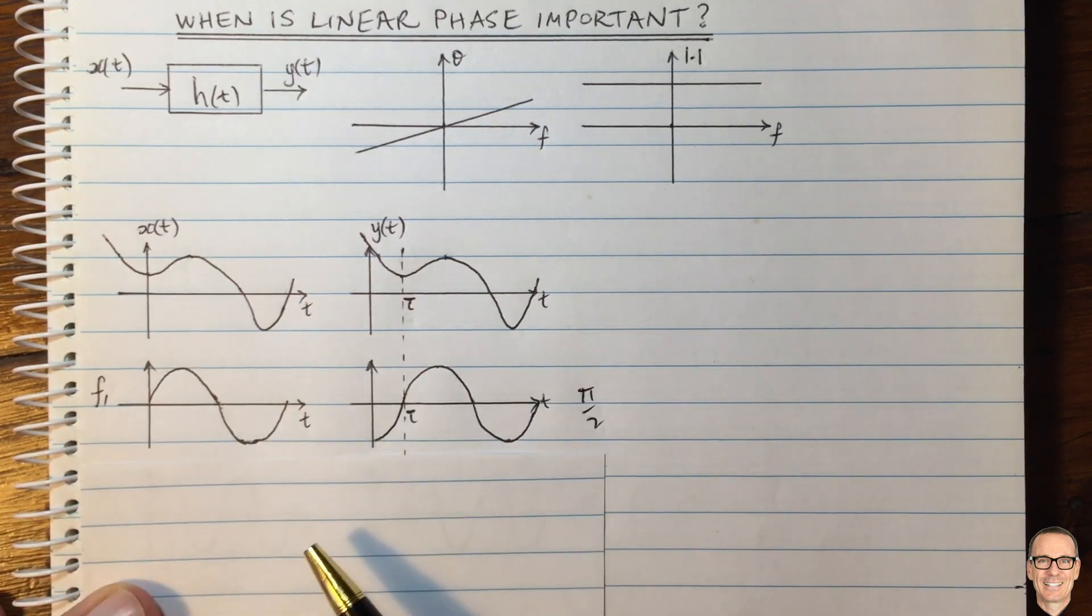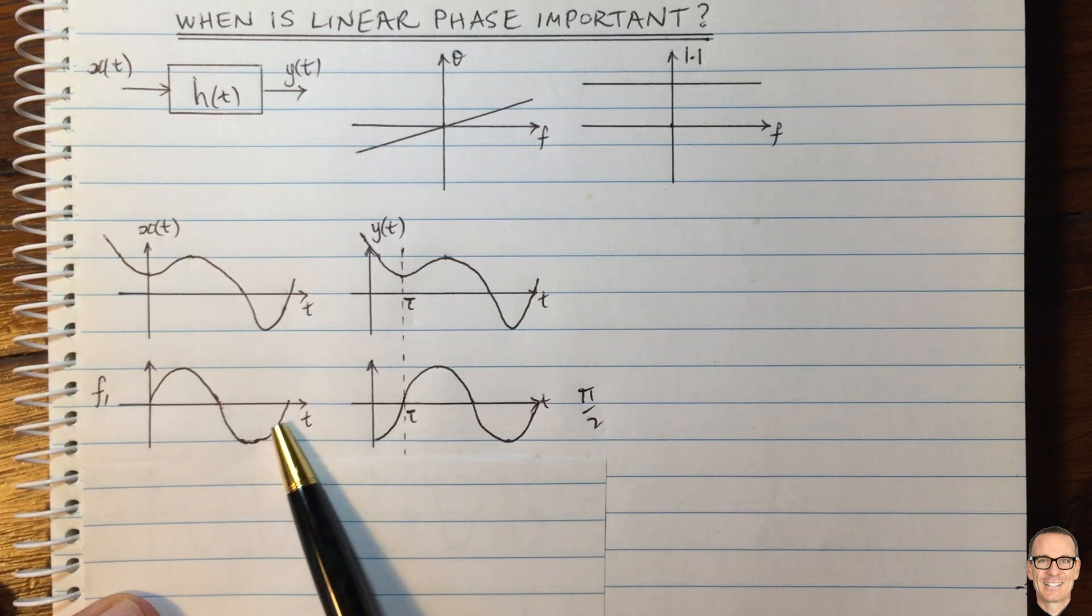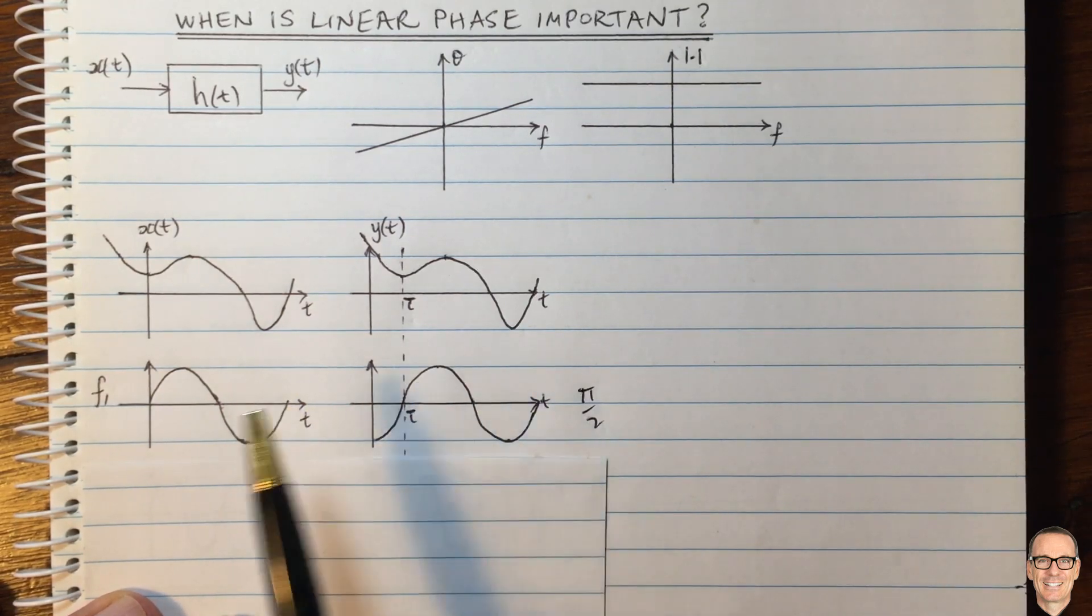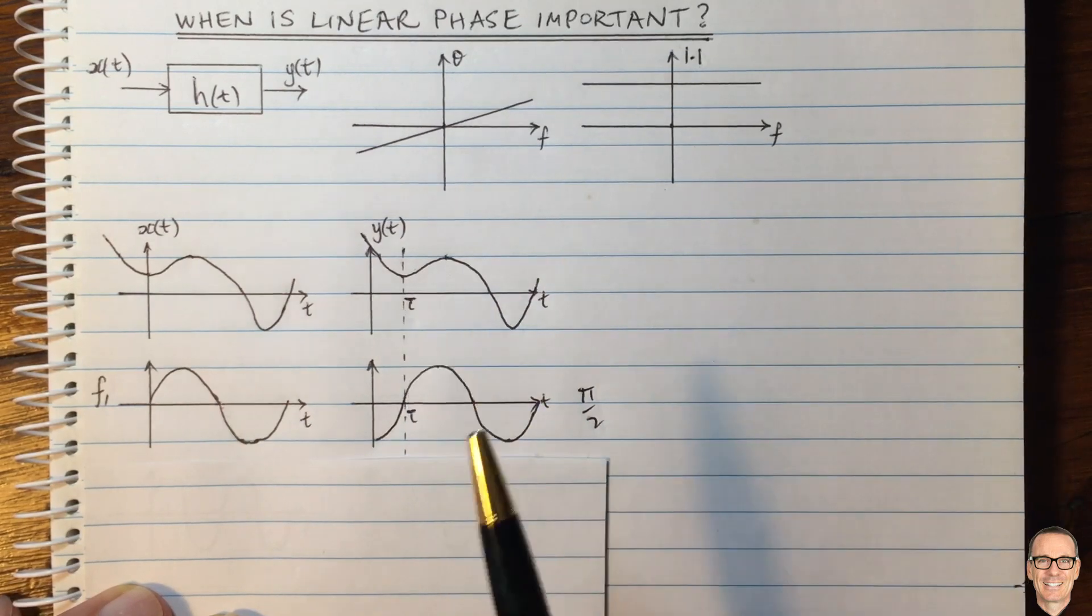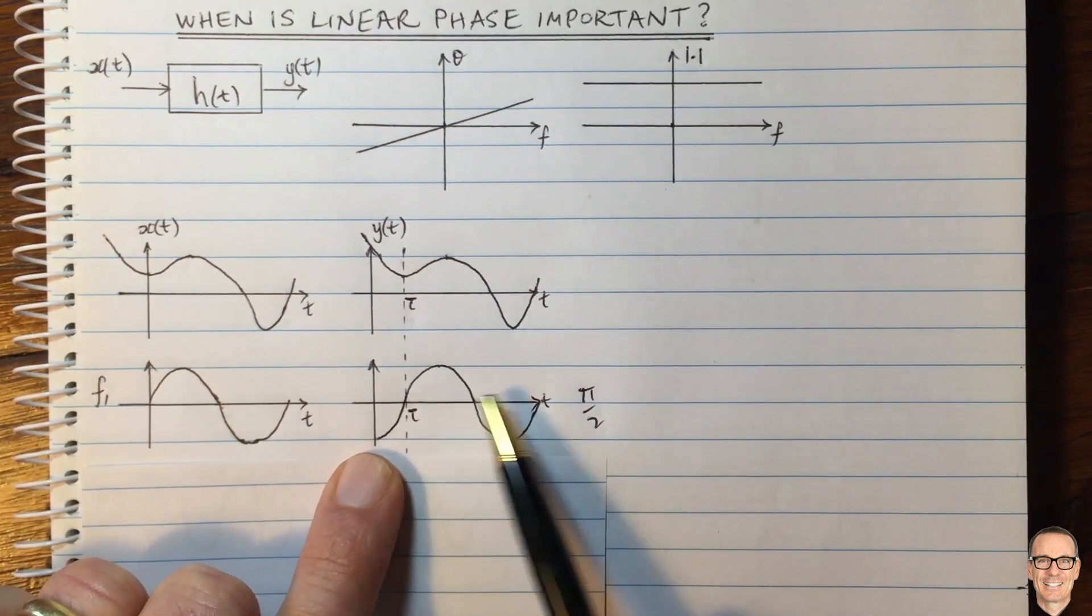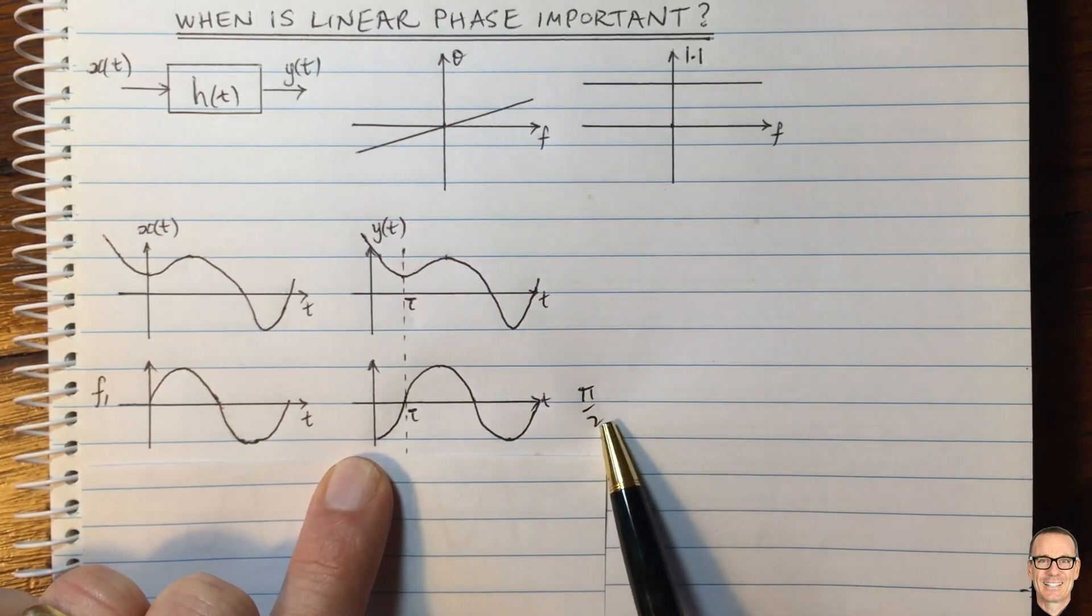So let's look at one of these components. I've drawn a waveform here. Now this waveform, I've chosen it carefully for this delay of Tor to be the one where the phase offset is pi on 2.